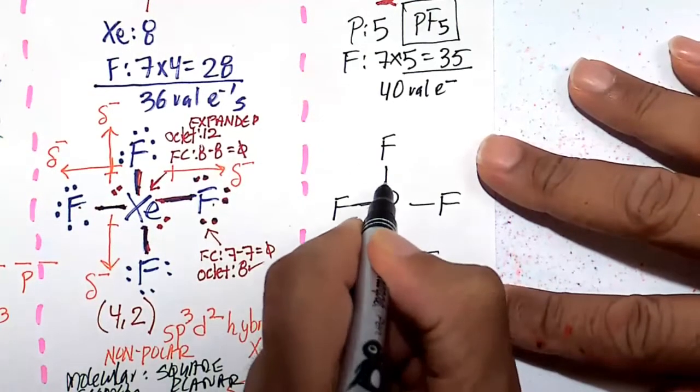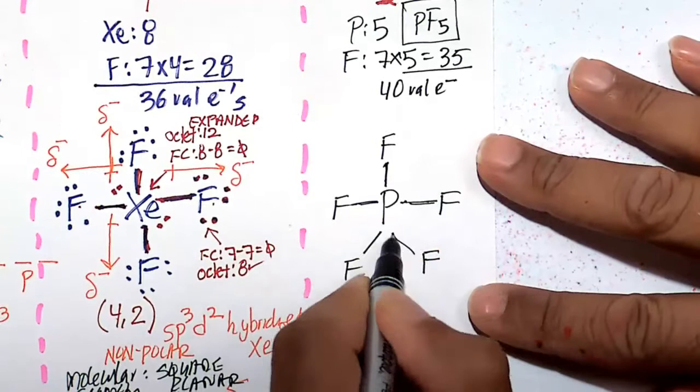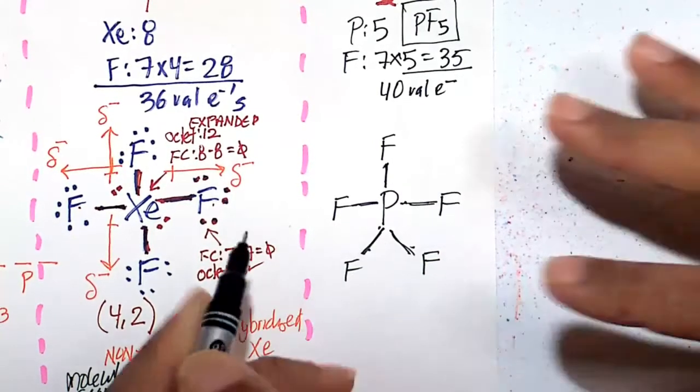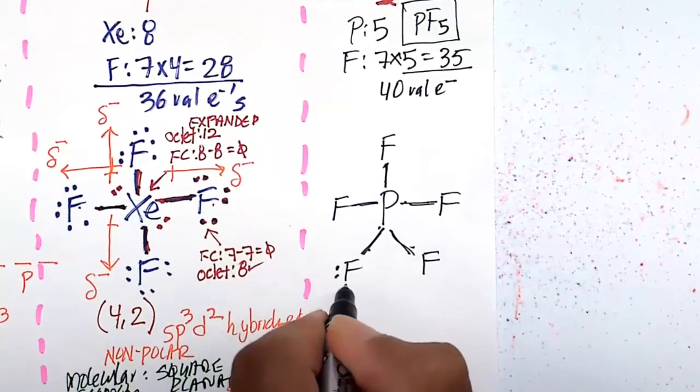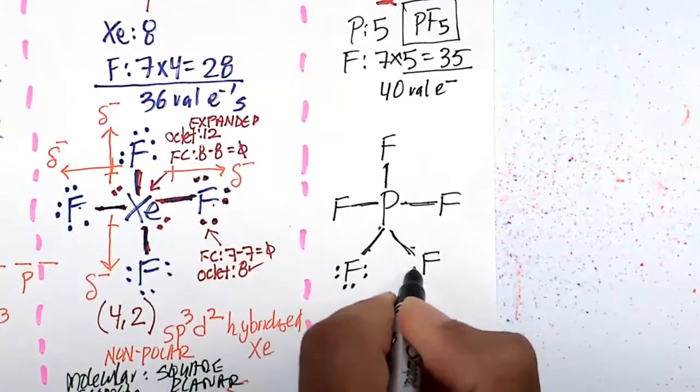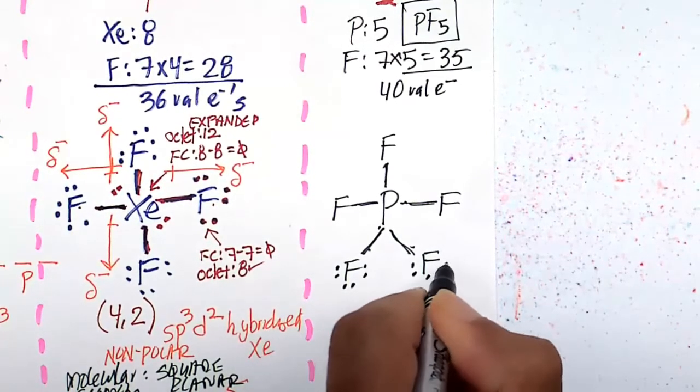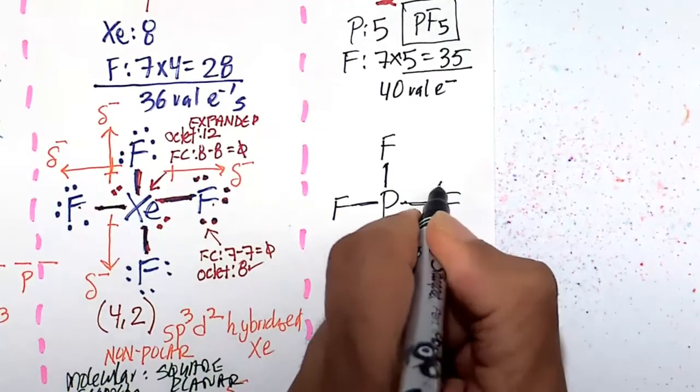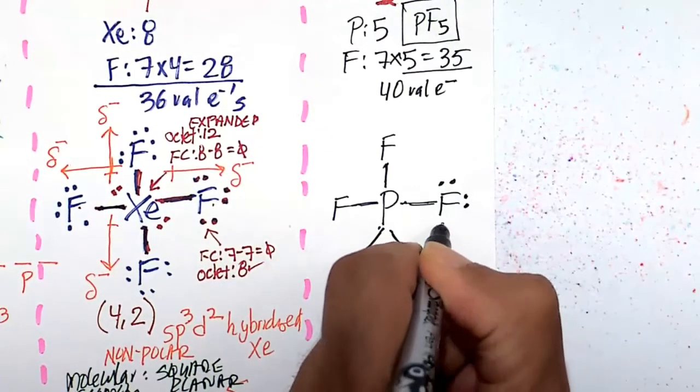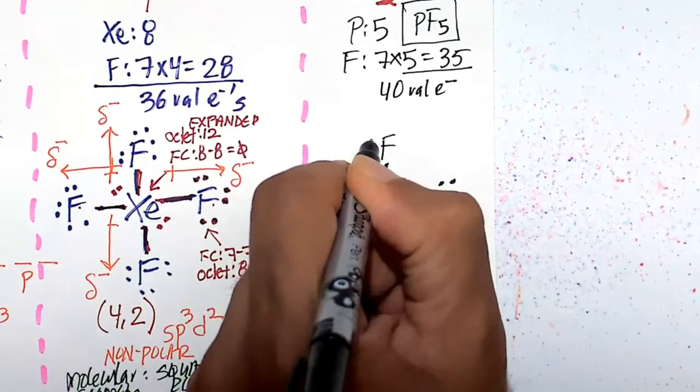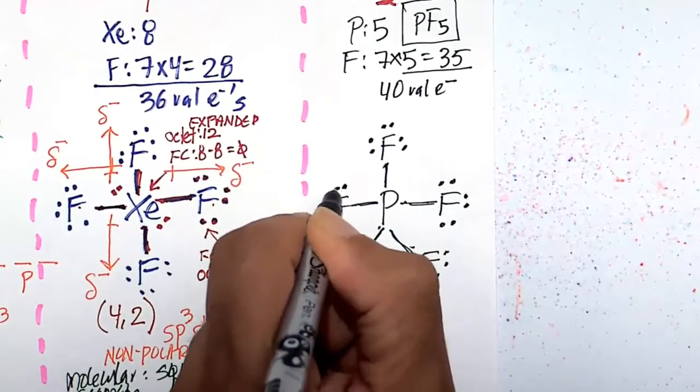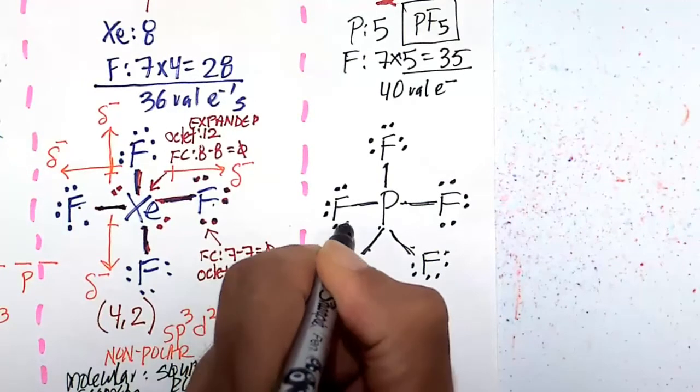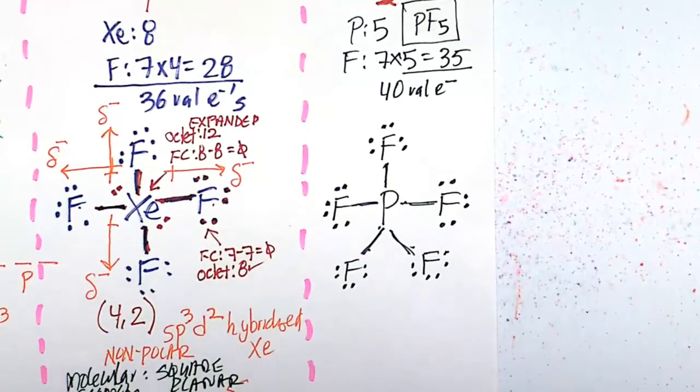So 1, 2, 3, 4, 5, 6, 7, 8, 9, 10. Looks like this is an expanded octet. Continuing to count: 11, 12, 13, 14, 15, 16, 17, 18, 19, 20, 21, 22, 23, 24, 25, 26, 27, 28, 29, 30, 31, 32, 33, 34, 35, 36, 37, 38, 39, 40. Yeah, this is pretty simple. PF5 with 40 valence electrons.